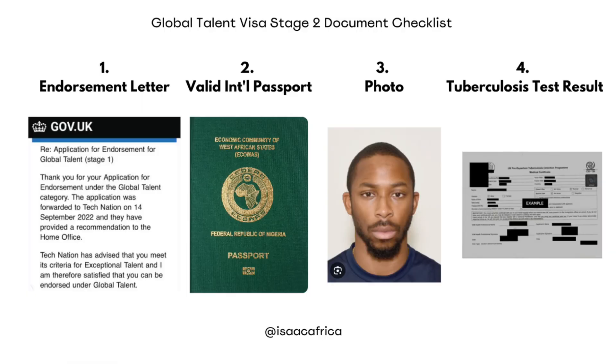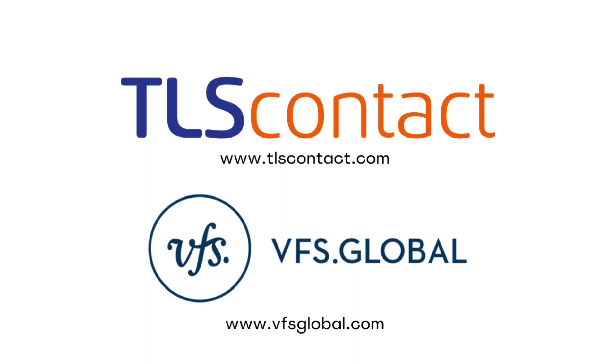Step 4: book an appointment. You will have to book an appointment to submit your documents, your biometric details, and your photo at one of the UK visa application centers in your country. In many cases, you'd have to use TLS if you're outside Europe, or VFS Global if you're within Europe. However, if you want to get the decision faster, you can apply for priority or super priority services — this attracts additional fees. With this, you could get the decision within 5 working days, or by the end of the next working day for super priority.